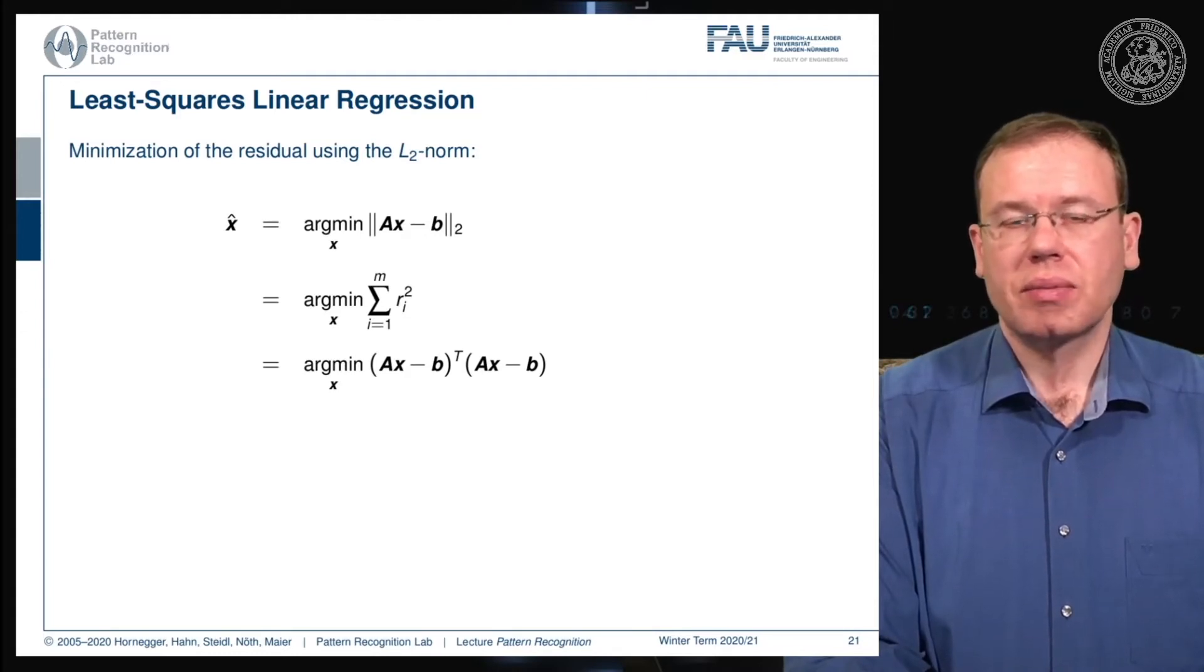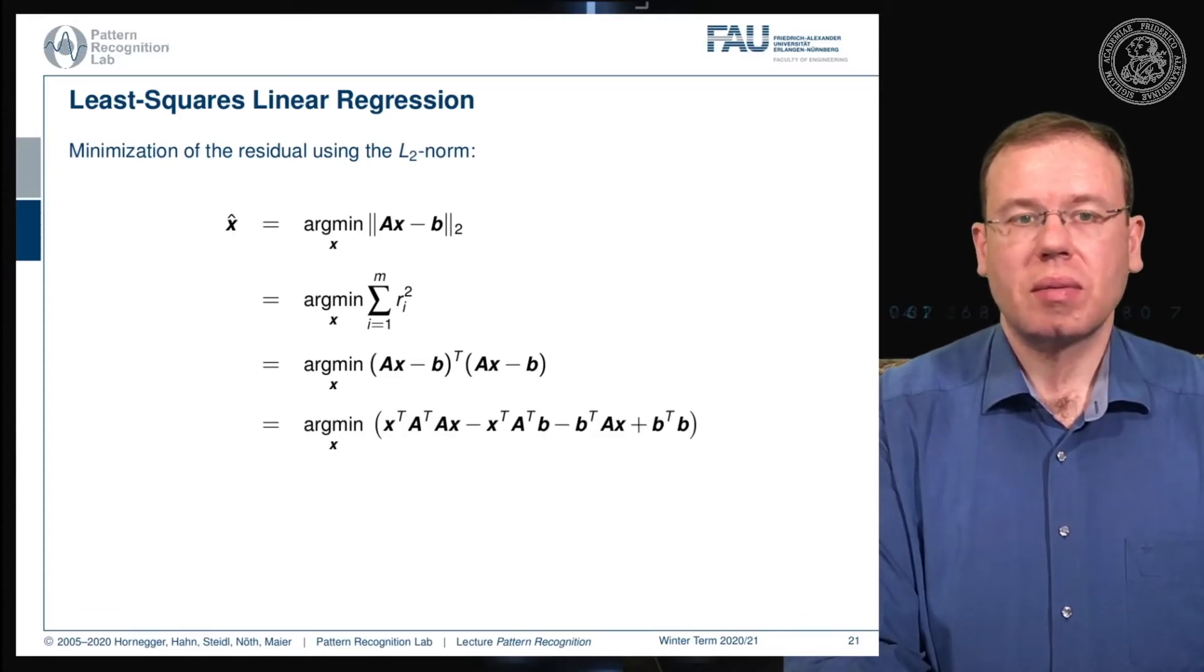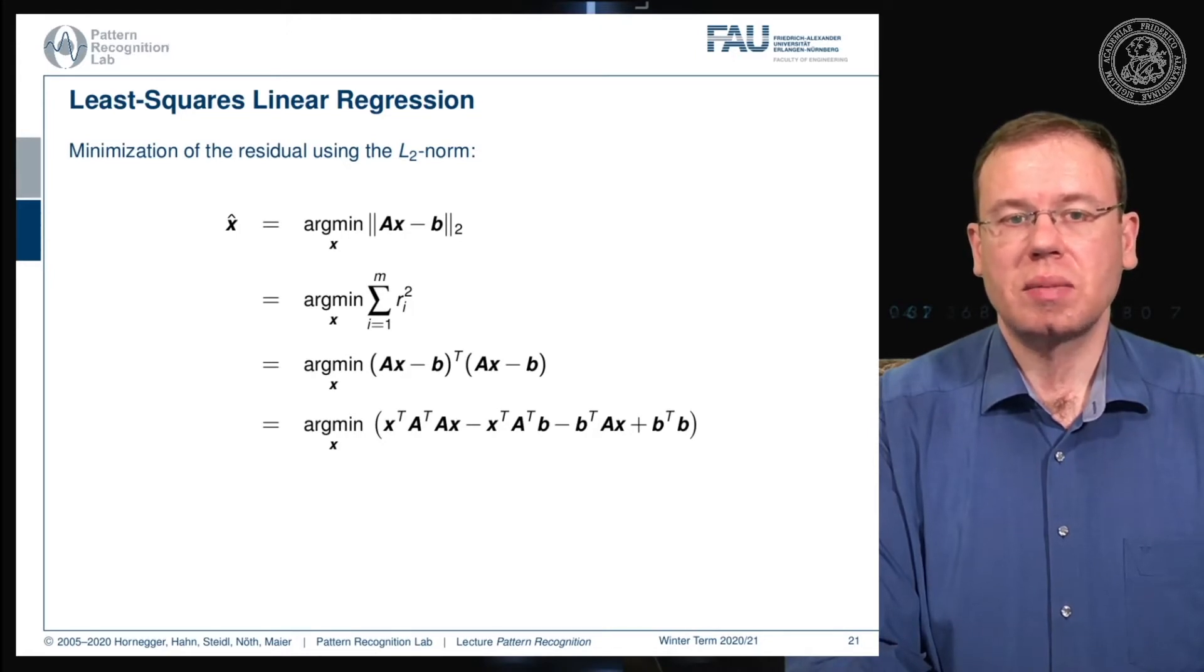I omitted this in the previous video, but now you see the full solution how to actually express that. We multiply all the terms with each other, which gives x transpose A transpose Ax minus x transpose A transpose b minus b transpose Ax plus b transpose b.